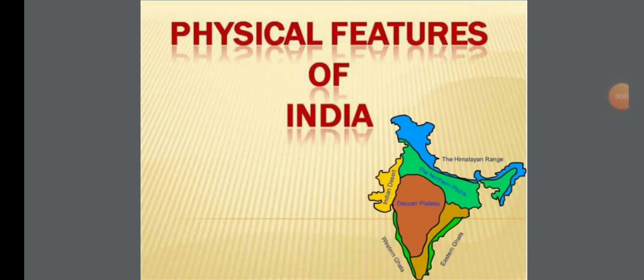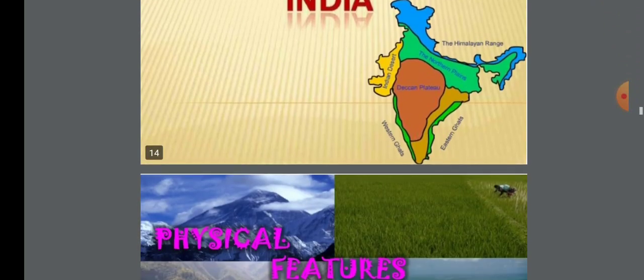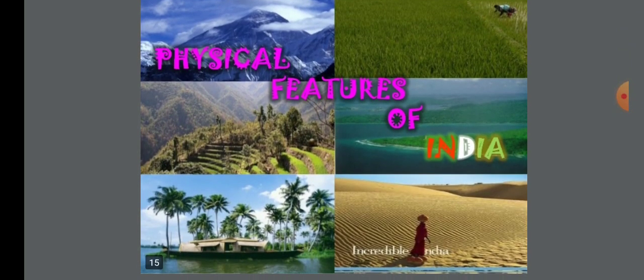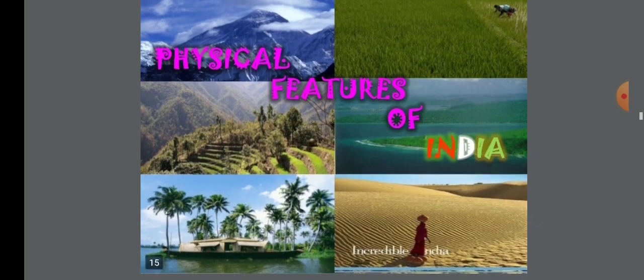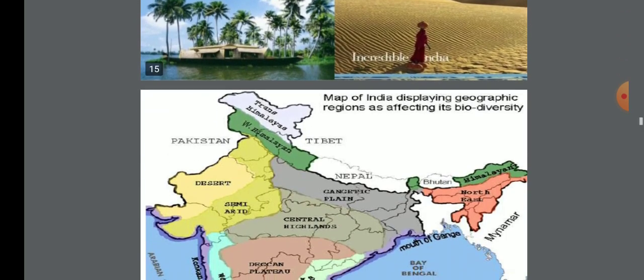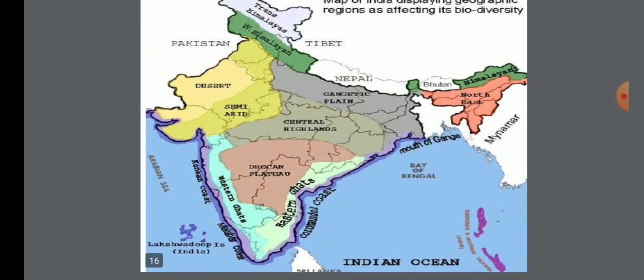Hello students, welcome back to Social Science class, Class 9th. As we were reading the second chapter of Geography, today I will explain the physical features of India. The physical features of India can be grouped under the following physiographic divisions: the Himalayan mountains, the Northern Plains, the Peninsular Plateau, the Indian Desert, the Coastal Plains, and the Islands. In the map of India, you can see different types of physical features.